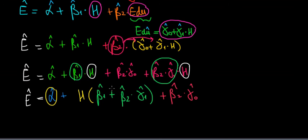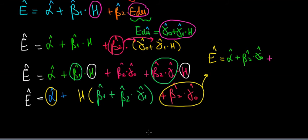Now let's group the constants together. Well, alpha is a constant, beta 2 plus gamma 0 is a constant, so let's write it together.